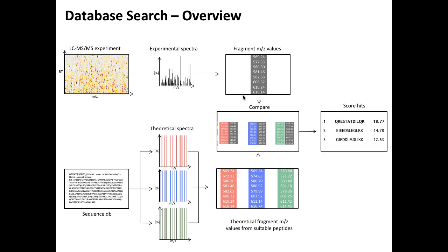Another important thing: you can only find sequences that are actually in your database — it won't give you new things. For example, in the human genome we have plenty of genomic variants. If your patient had different single nucleotide polymorphisms and you didn't sequence that particular patient, you will not be able to find those peptides. So there are quite a few caveats — we restrict the search space, which makes it easier, but we lose some information. We need to ensure the scoring works well and get some idea of which scores to trust.